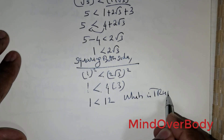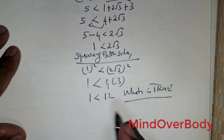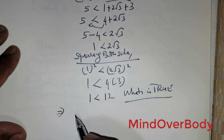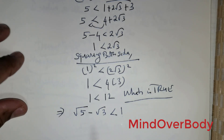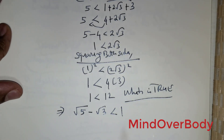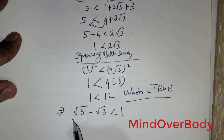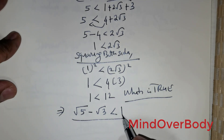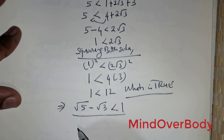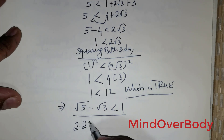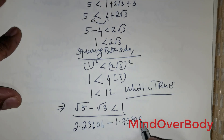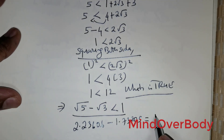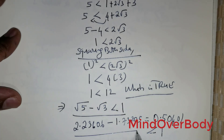Since the result is true, Case 2 holds. This means root of 5 minus root of 3 is indeed less than 1. For verification using estimation: root of 5 is approximately 2.23606 and root of 3 is approximately 1.73205.